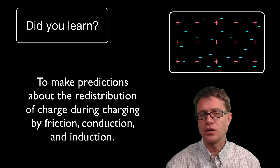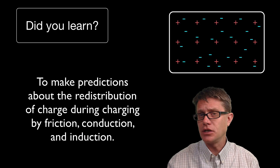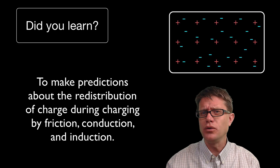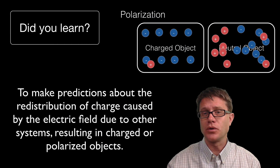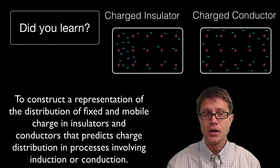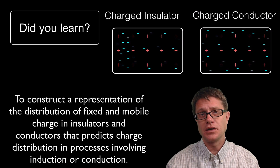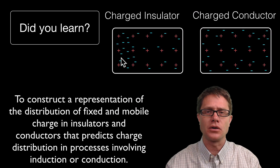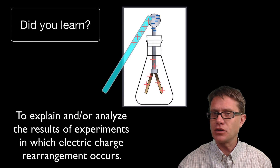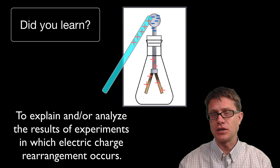So could you make predictions about the distribution of charge using friction — rubbing an object to pull electrons off or add them? Conduction means touching two objects so electrons can move. Induction means just moving where charges are without physical contact. Could you construct a representation of charges in an insulator versus a conductor? In an insulator charges stay fixed wherever you put them; in a charged conductor they move away from each other. And could you explain the results of an electroscope using charge and the ideas of induction and conduction? I hope so, and I hope that was helpful.